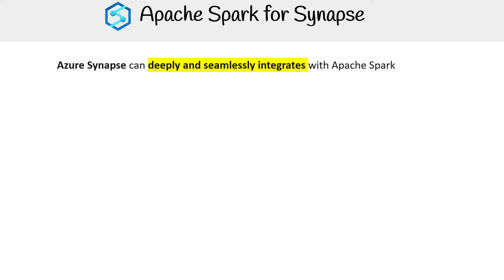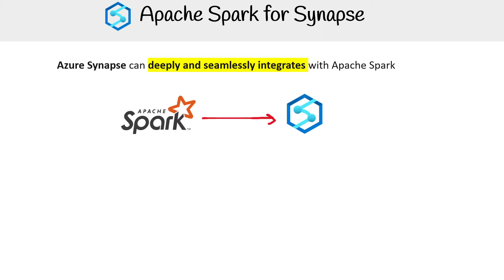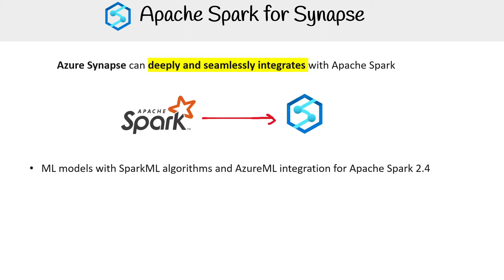Azure Synapse can deeply and seamlessly integrate with Apache Spark, as you can see here — ML models with Spark ML algorithms and Azure ML integration for Apache Spark 2.4, with built-in support for Linux Foundation Delta Lake.